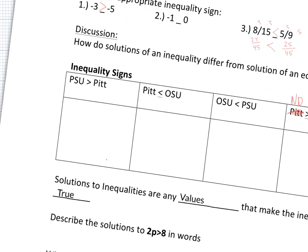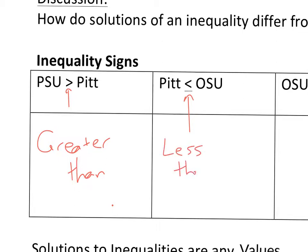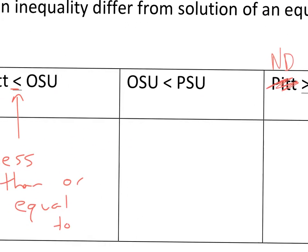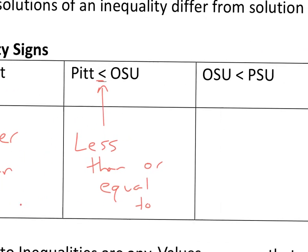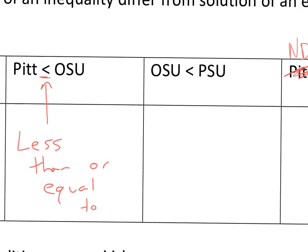Looking at example inequality symbols using football teams: one example would say Penn State is greater than Pitt — that's the greater than symbol. Another says Pitt is less than or equal to OSU — Ohio State or Oklahoma State depending on where you're from. That extra line underneath is the less than or equal to sign. And Ohio State is less than Penn State. So whoever made this liked Ohio State a bit more than Pitt, but not as much as Penn State.